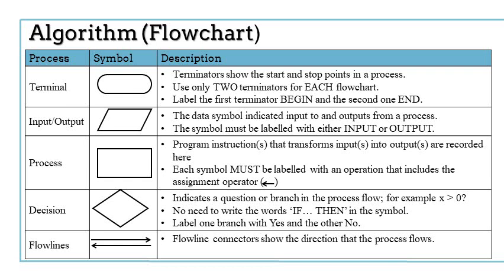Now the process symbol is a square and this program instruction or instructions that transforms input or inputs into output or outputs are recorded here. So we're looking at what process actually takes place. Each symbol must be labeled with an operation that includes the assignment operator. That means you must indicate that the operator exists using the arrow.